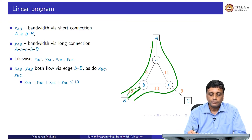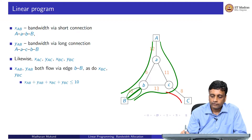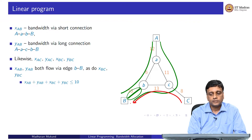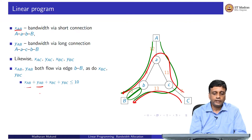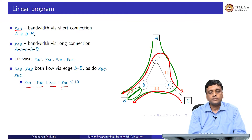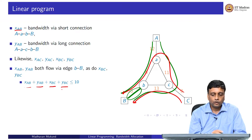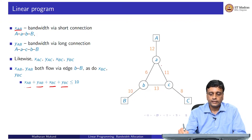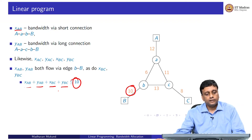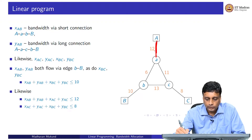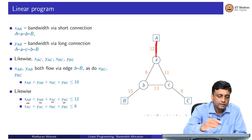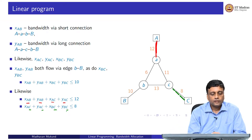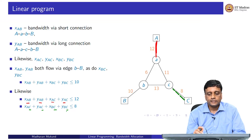Traffic from B to C also contributes to congestion on this edge. Any traffic which comes to B uses this link. So if you look at all the constraints on this edge, you have xAB and yAB — all traffic coming to B from A by the short and long route — plus xBC and yBC, which is all the traffic coming from C. This total traffic cannot exceed the capacity of this link, which is 10. Similarly, all traffic coming to A from B or C must add up to less than 12, and all traffic coming to C cannot exceed 8.